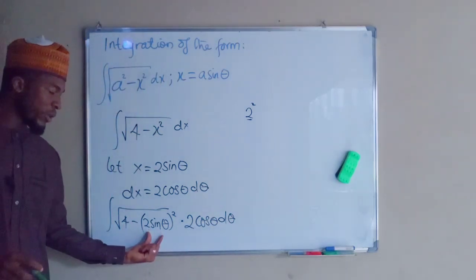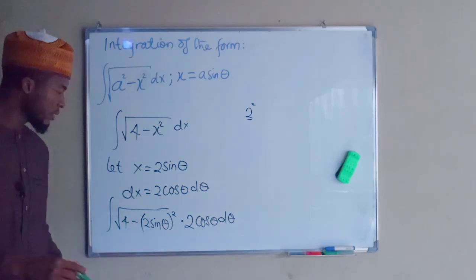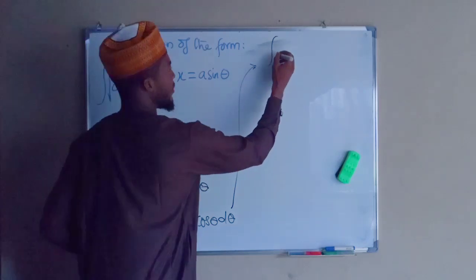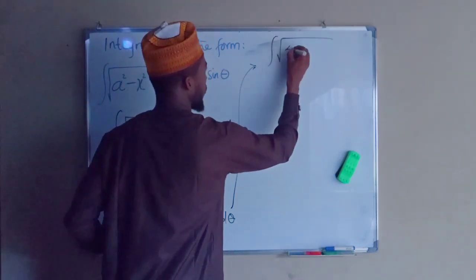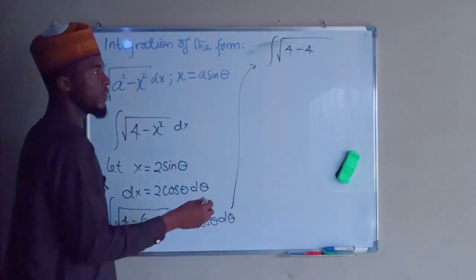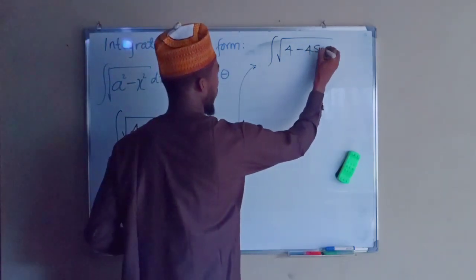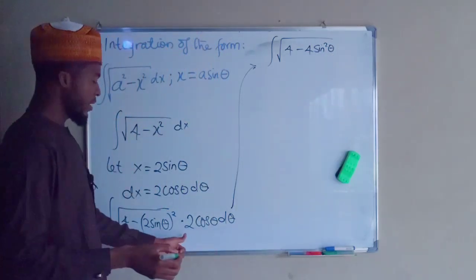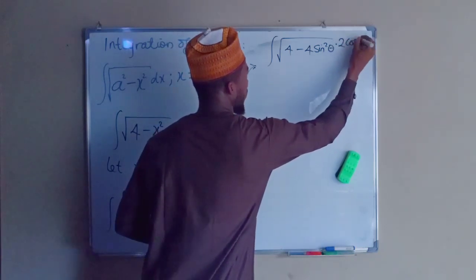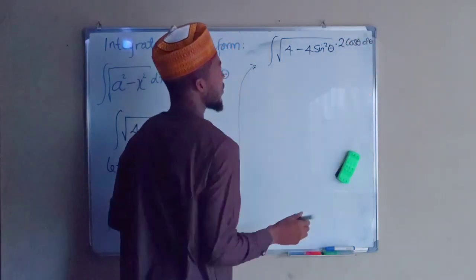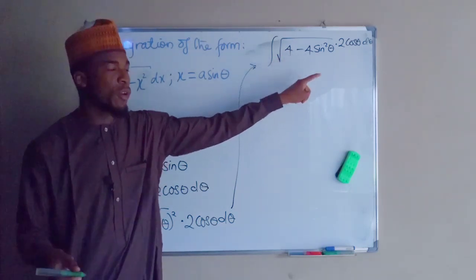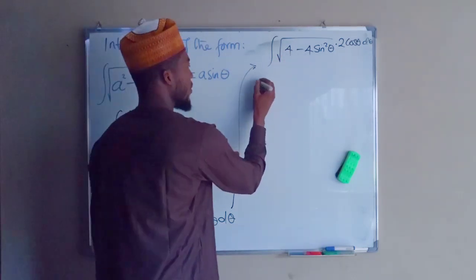If we expand this bracket we obtain the integral of the square root of 4 minus 4 sine squared theta, then times 2 cos theta d theta. We can factorize 4 because we have 4 in common between the two terms.